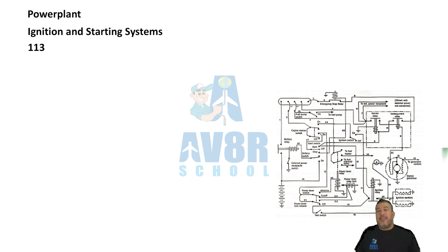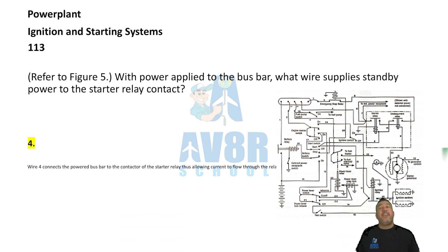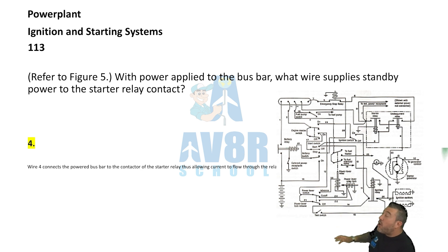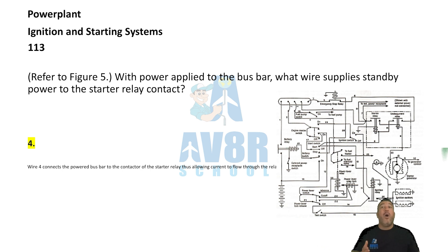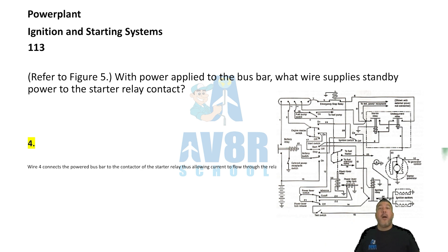Number 113. Referring to figure 5, with power applied to the bus bar, what wire supplies standby power to the starter relay contact? Wire number 4 supplies standby power to the starter relay contact.